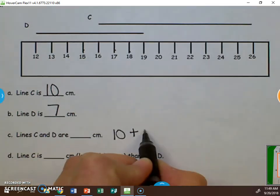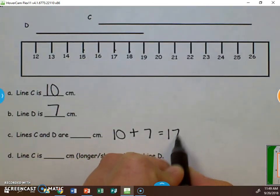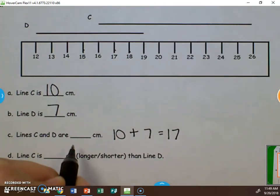So we would add 10 and 7 to get 17. So line C and D are 17 centimeters long.